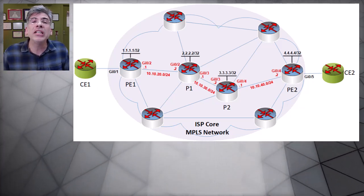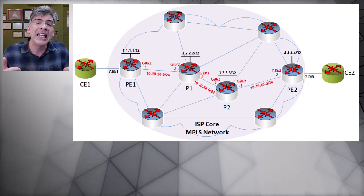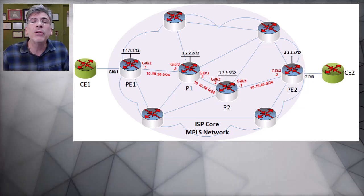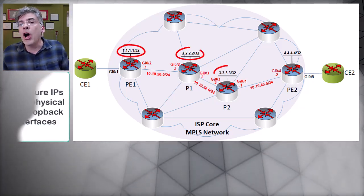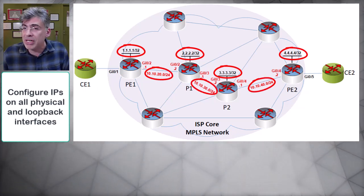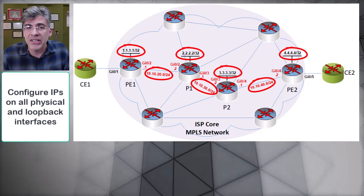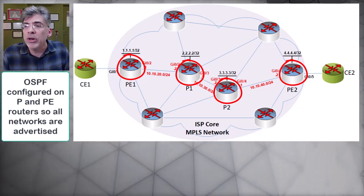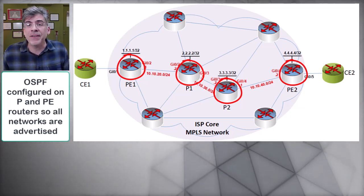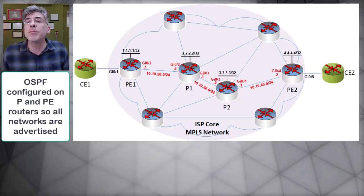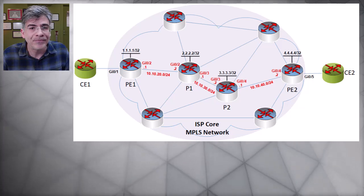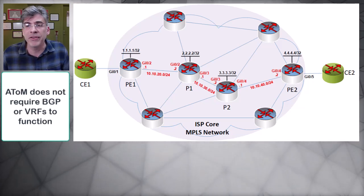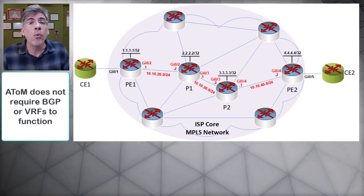Much of the configuration of the underlay network remains the same as that used for layer 3 VPNs. We start by configuring all interfaces with the appropriate IP addresses including physical and loopback interfaces, then configure OSPF on all P and PE routers so all their networks are advertised to each other. For AToM we don't need to configure BGP like we did for VPNv4 configurations, and we don't need VRFs either.